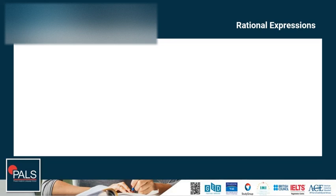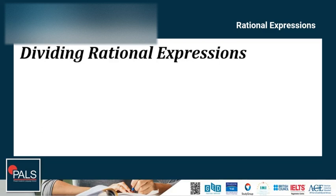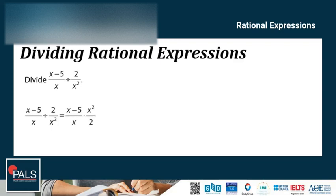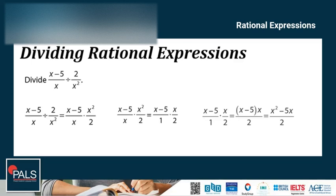Let's proceed to dividing rational expressions. Dividing rational expressions uses the same flip-and-multiply rule used with fractions. We write the division as a multiplication problem in which the first expression is multiplied by the reciprocal of the second. For example: x minus 5 over x, divided by 2 over x squared. Flip and multiply: we have x minus 5 over x, times x squared over 2. Cross-canceling x and x squared gives x minus 5 over 1, times x over 2. Multiplying across gives the final answer x squared minus 5x over 2.